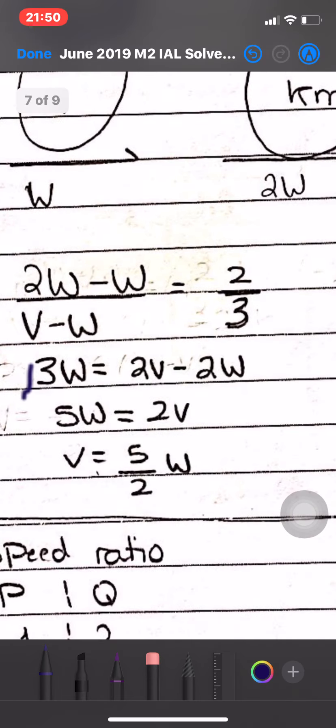Now we use impulse. We have M times V minus W equals KM times 2W minus W. M cancels out, so V minus W equals KW. V is 5 over 2 W, so 5 over 2 W minus W equals KW, which gives us K equals 3 over 2.